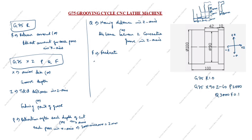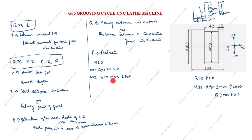Now we write the full program. Program name: O1234. N01: G28 U0 W0 — G28 is the home position, U0 means X0, W0 means Z0. N02: G97 M03 S800 — G97 is constant spindle speed, M03 is spindle on, S800 is the spindle speed.